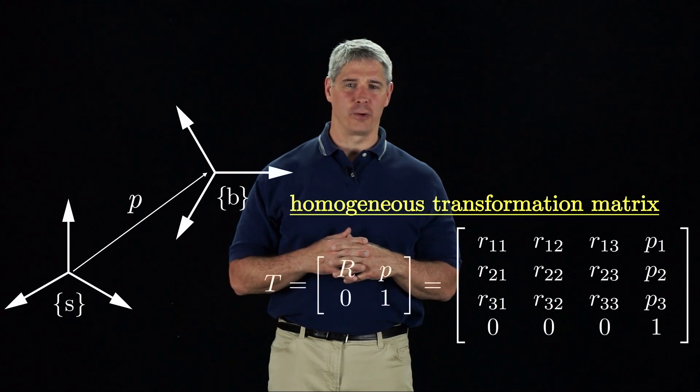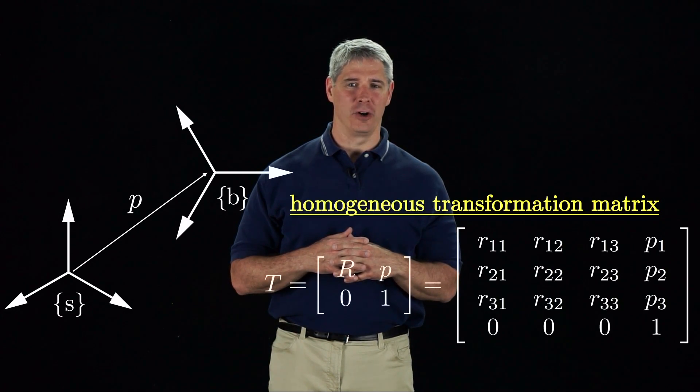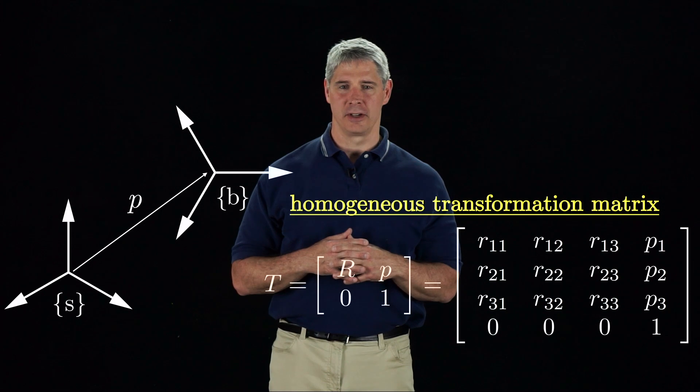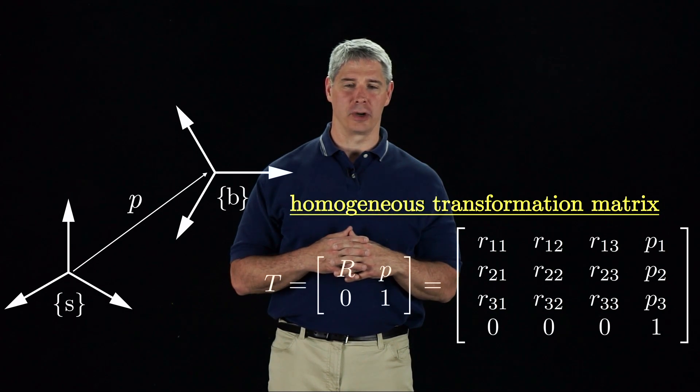We gather these together in a single 4 by 4 matrix T called a homogeneous transformation matrix, or just a transformation matrix for short.